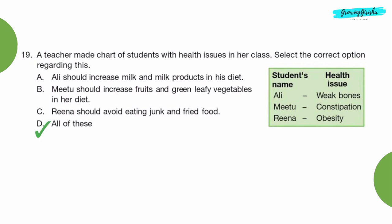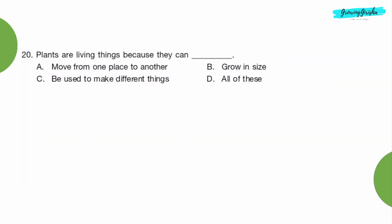Option D, all of these. Question 20: Plants are living things because they can dash. Option B, grow in size.